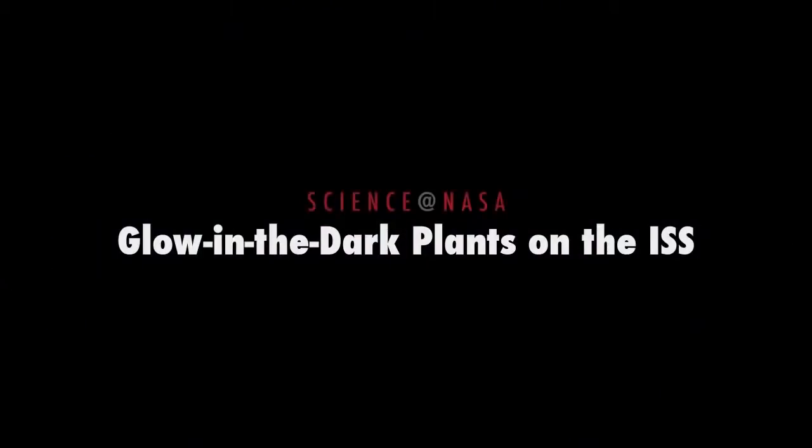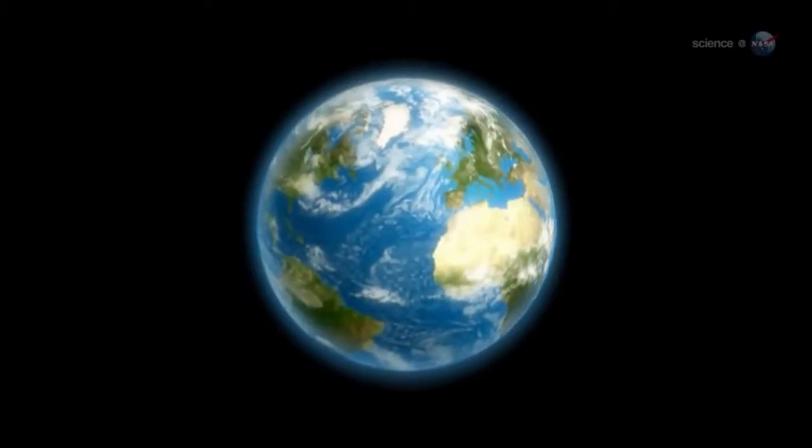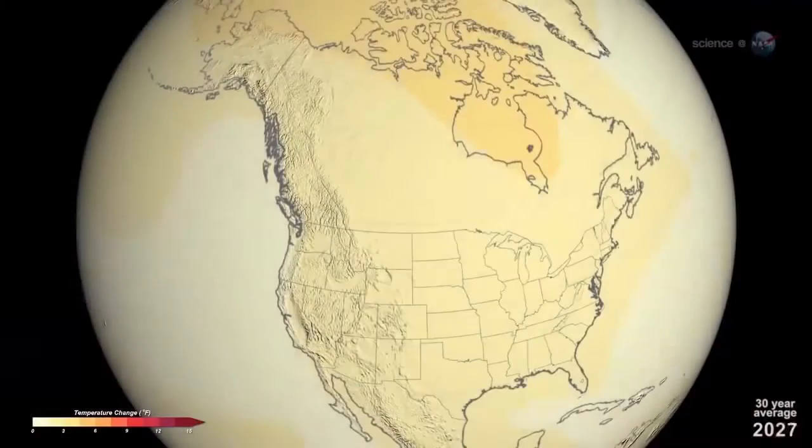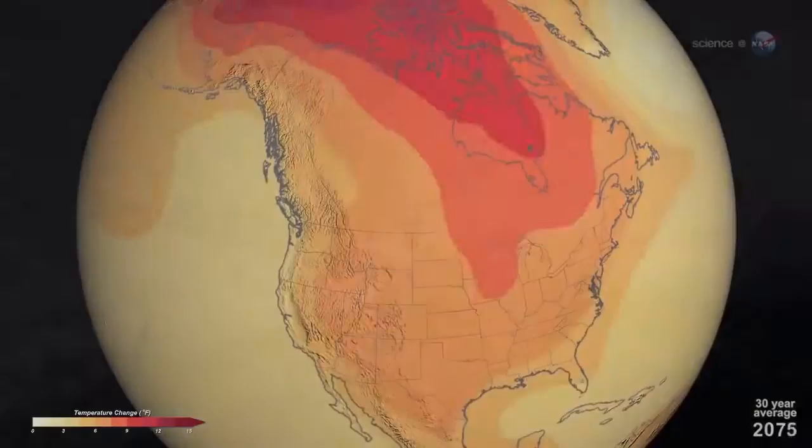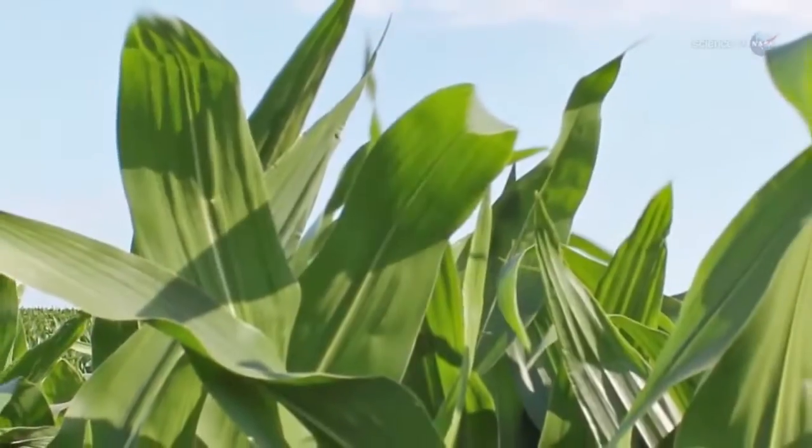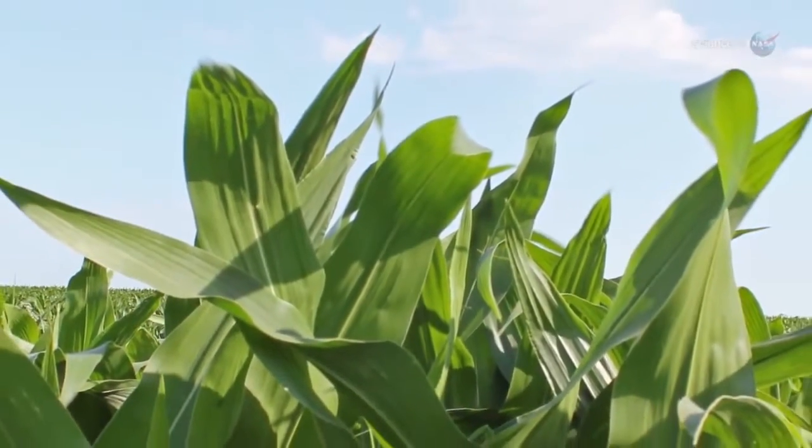Glow-in-the-dark plants on the ISS, presented by Science at NASA. The world is changing. As greenhouse gases accumulate in the atmosphere, global temperatures are on the rise. Sea levels inch upward as polar ice retreats. Crops are growing in new places. The world is changing.